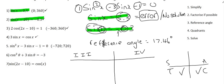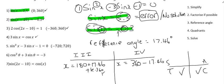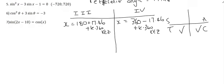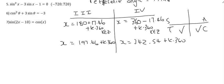Now we start off saying x equals for each quadrant. Quadrant three says 180 plus, quadrant four says 360 minus — that's our template — and we fill in the reference angle of 17.46. So x equals 180 plus 17.46, plus k times 360, and x equals 360 minus 17.46, plus k times 360. Simplifying gives us 197.46 plus k times 360, and 342.54 plus k times 360.